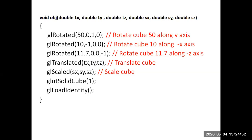Inside the OBJ function, first gl_rotate is called to rotate the cube 50 degrees along the negative X axis. Then gl_rotate rotates the cube 10 degrees along the negative X axis. Next, gl_rotate rotates the cube 11.7 degrees along the negative Z axis. Then gl_translate translates the cube with parameters TX, TY, TZ, and gl_scale performs scaling with parameters SX, SY, SZ.